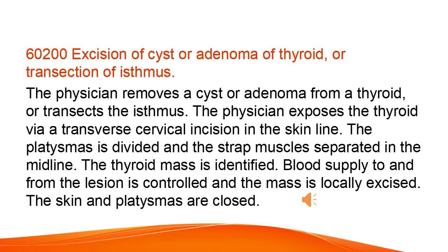Excision of Cyst or Adenoma of Thyroid, or Transsection of Isthmus. The physician removes a cyst or adenoma from a thyroid, or transects the isthmus. The physician exposes the thyroid via a transverse cervical incision in the skin line. The platysmas is divided and the strap muscles separated in the midline. The thyroid mass is identified. Blood supply to and from the lesion is controlled and the mass is locally excised. The skin and platysmas are closed.